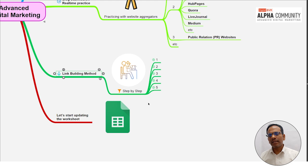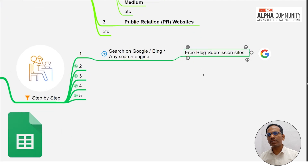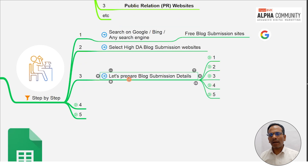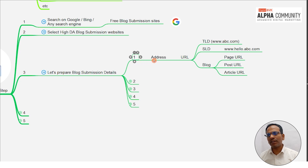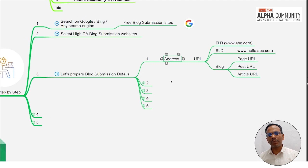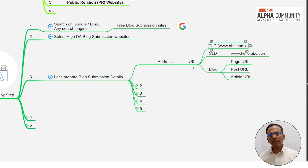Here is the step-by-step link building method. Step one: search on Google, Bing, or any search engine for free blog submission sites. Step two: select a high DA blog submission website. Step three: prepare the blog submission details. We have to decide the blog submission site — whether it is a TLD domain, SLD domain, or blog-specific page, post, or article.